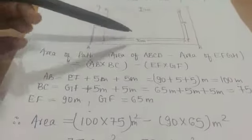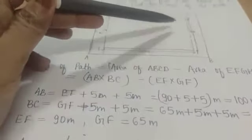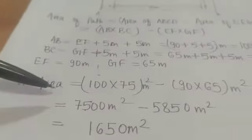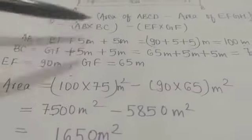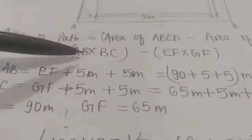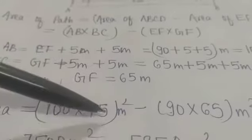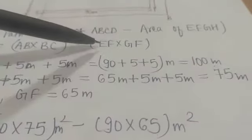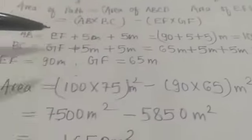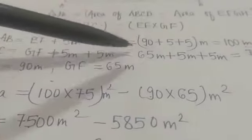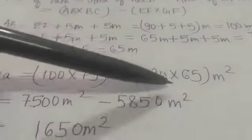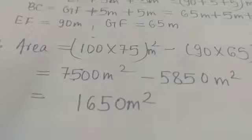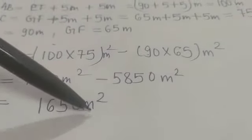We have EF as 90 meters and GF as 65 meters. Now, area of path equals AB into BC minus EF into GF. That is 100 into 75 minus 90 into 65. On solving this we get the area of path as 1650 meters square.